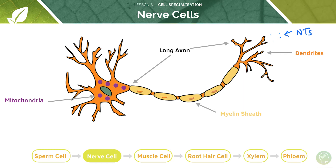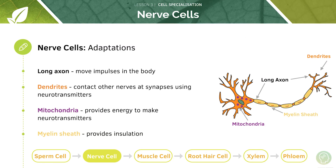We also need insulation in the cell so that the electrical impulse is transferred as efficiently and as quickly as possible. Nerves have a myelin coat — the myelin sheath — which insulates the nerve cells. That's a summary of what we've just covered.